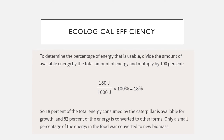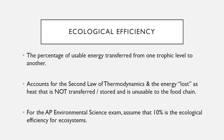On the AP test, we always assume 10% ecological efficiency when energy moves from producers to primary consumers, primary to secondary, secondary to tertiary. It's the percentage of usable energy transferred from one trophic level to another, accounting for the second law of thermodynamics. The energy isn't destroyed — it's lost to the food chain as heat. We always assume about 10% for the AP test, which is why an energy pyramid works.